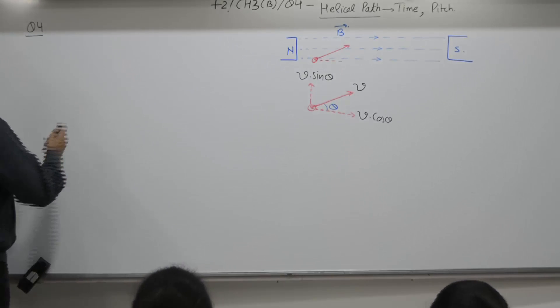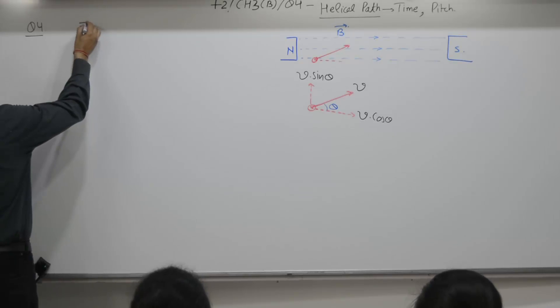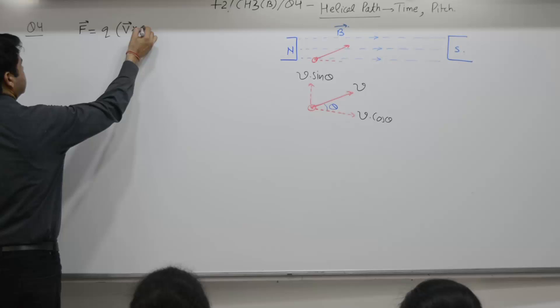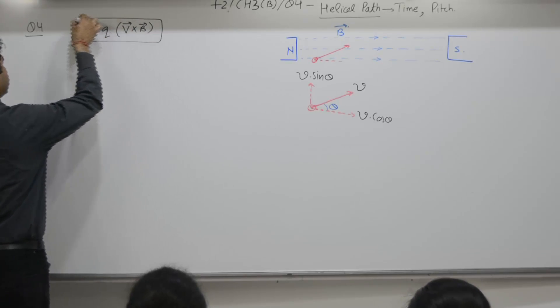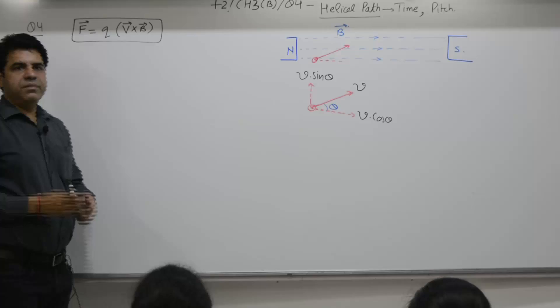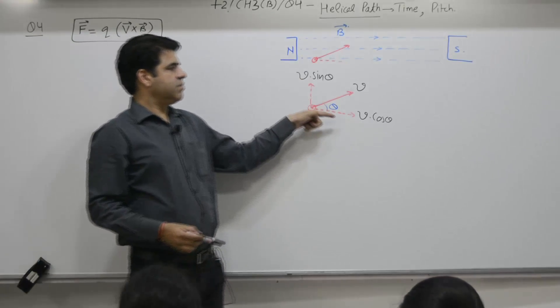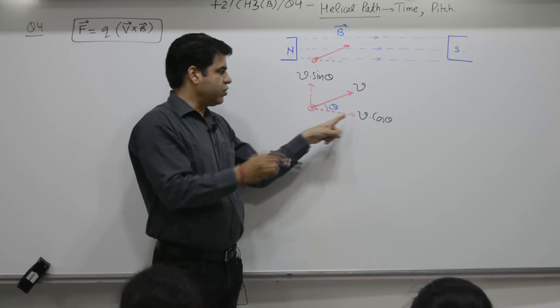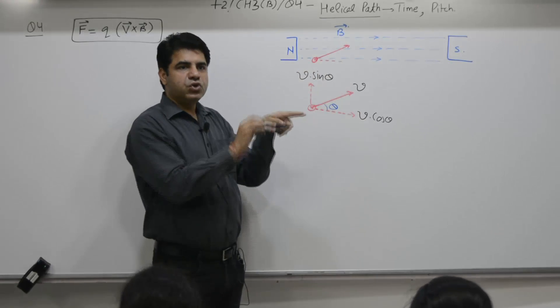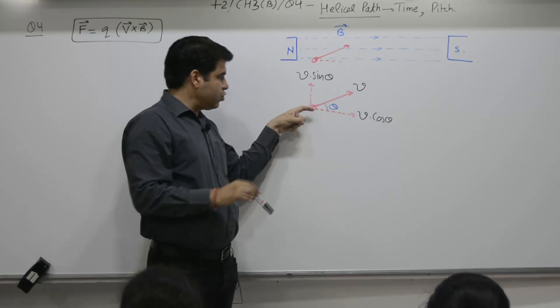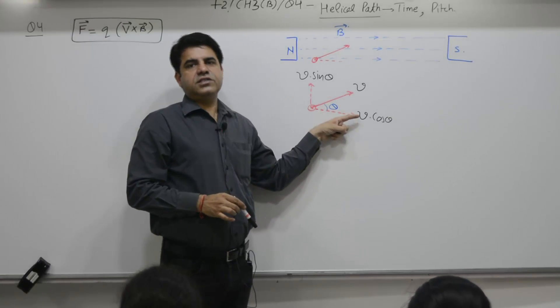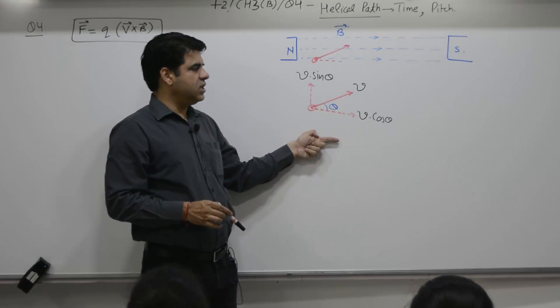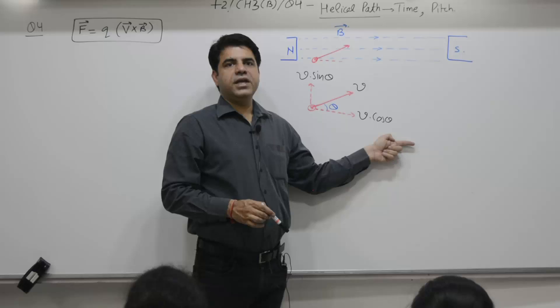Formula is, f is q, v cross B. V and B are parallel. V cos theta is parallel. V cos theta is parallel to B. So, force acting due to this component is zero. So, because of this, charge particle will continue to move with the same speed.